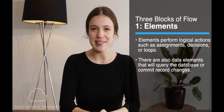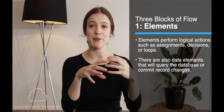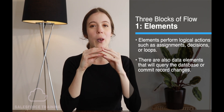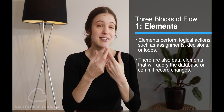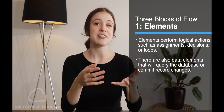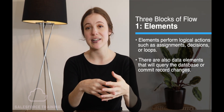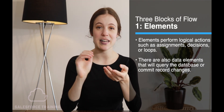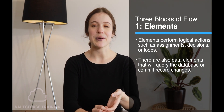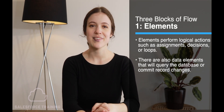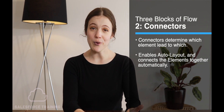When it comes to Flow, there are three main building blocks. The first building block is what we call elements. Elements are the individual blocks in the flow — they perform logical actions like assignments, decisions, or loops. There are also data elements which do things like query the database or commit record changes. These are what we call elements in Flow.